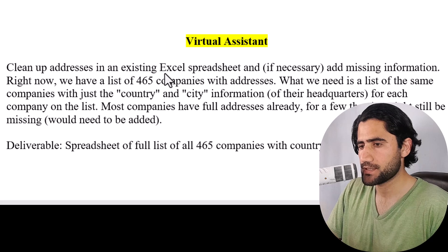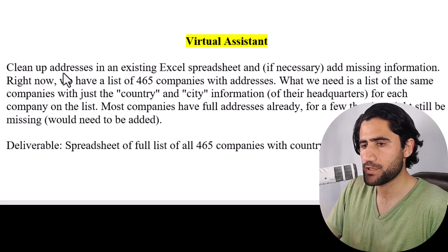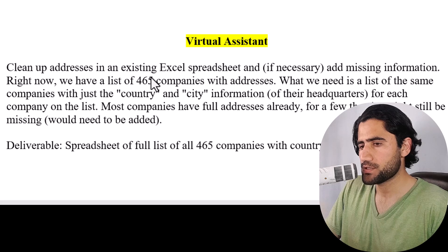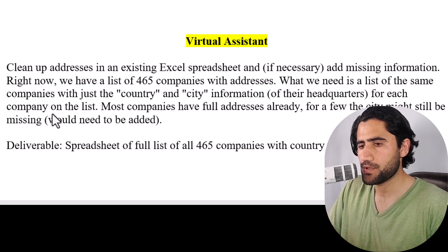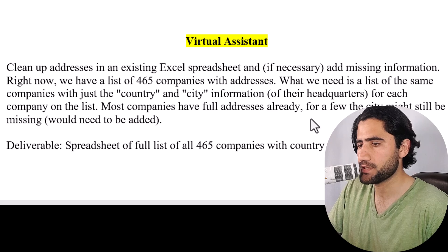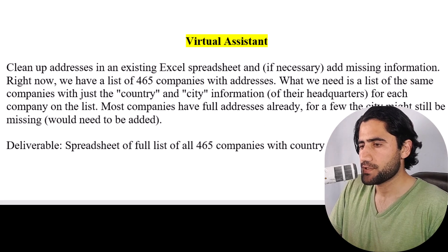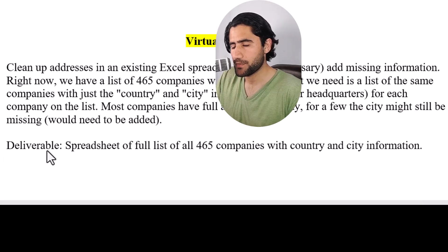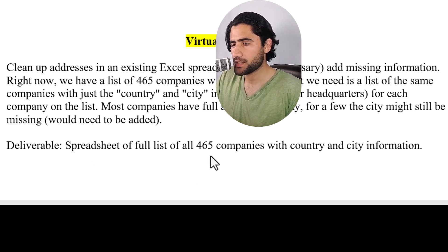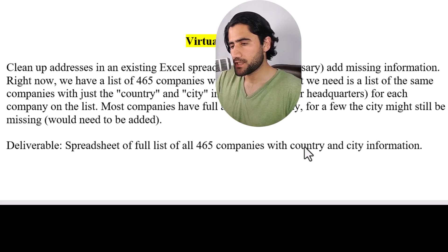Here is the client instruction. He is saying to clean up an existing spreadsheet and if necessary add missing information. Right now we have a list of 465 companies with addresses. What we need is a list of the same companies with just the country and city information for the headquarters of each company. Most companies have a full address already but for a few, the city might be missing. The deliverable is a full list of all 465 companies with country and city information.